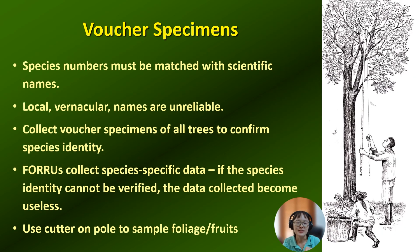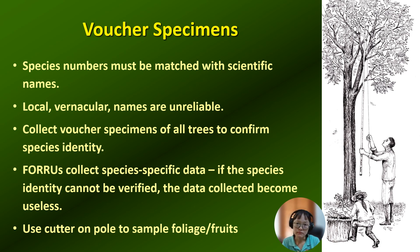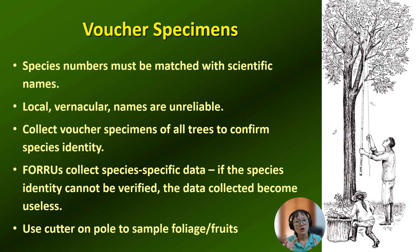I would like to emphasize that you should always match the species numbers with scientific names, because local names are unreliable. If we do not know the scientific name of a species at the beginning, we can have someone else help us. However, we need a voucher specimen for species identification.